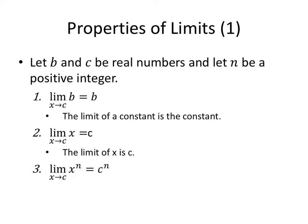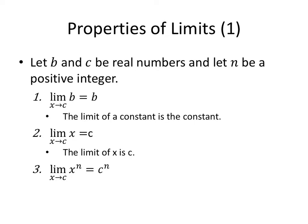So let's start with some properties of limits. Let B and C be real numbers and let N be a positive integer. First, the limit as X approaches C of B equals B because B has nothing to do with X. B doesn't care what X is doing. X could go to C. X can go to the store. It doesn't matter. B is just going to hang out and be B because the limit of a constant is just the constant itself.